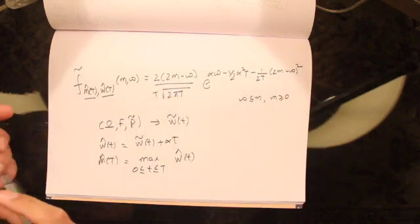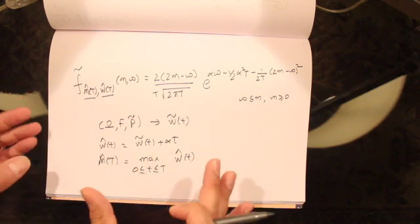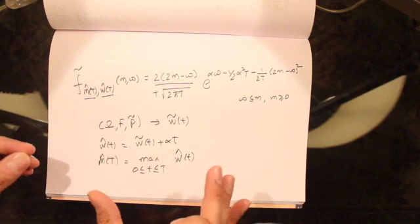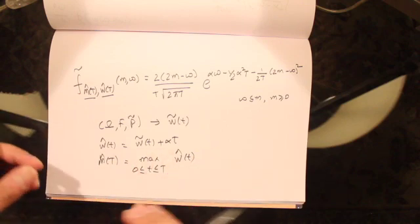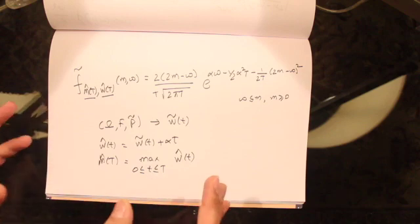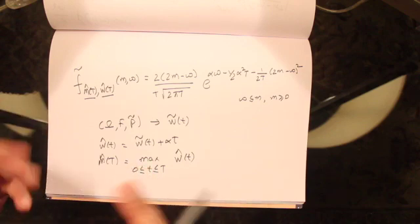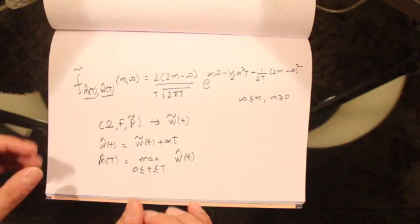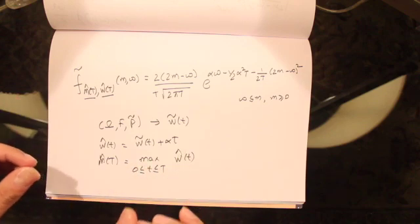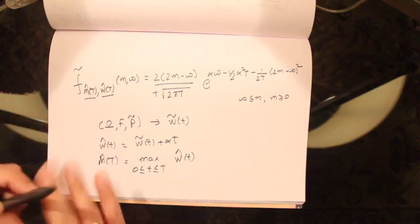So today what we would like to do is use this joint density function to compute the value of a barrier option. Let's see how we can use this to compute the price of a barrier option.